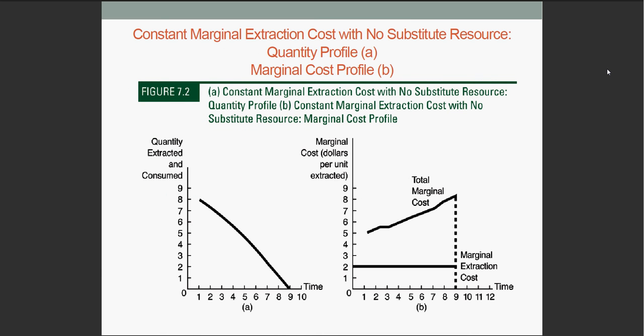On this slide, we show the quantity and cost of a certain depletable resource. On the left, we have a plot of the resource quantity over time. You can see that the quantity extracted steadily drops until the resource is no longer consumed, at time 9 here. This does not mean that the resource is fully exhausted, though.